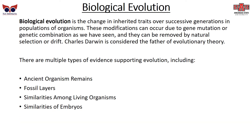Let's talk about biological evolution. Biological evolution is the change in inherited traits over successive generations in populations of organisms. These modifications can occur due to gene mutation or genetic combination, whether through intentional breeding or natural gene mutations. They can be removed by natural selection or genetic drift. Charles Darwin is considered the father of evolutionary theory. There are multiple types of evidence supporting evolution, including ancient organism remains, fossil layers, similarities among living organisms, and similarities of embryos.